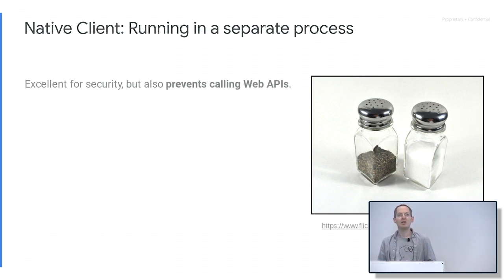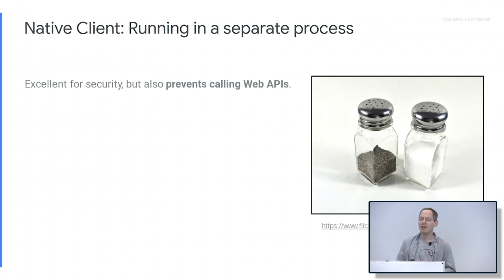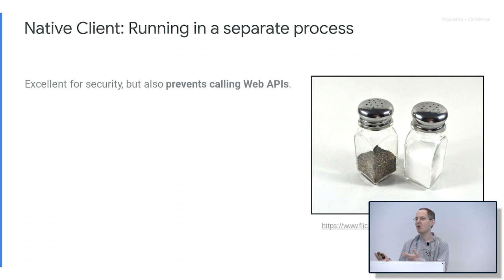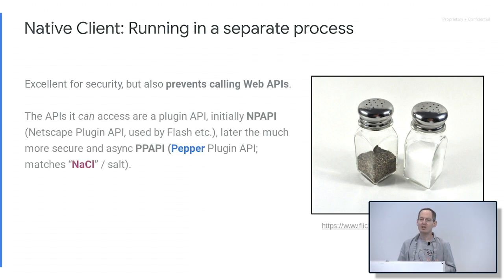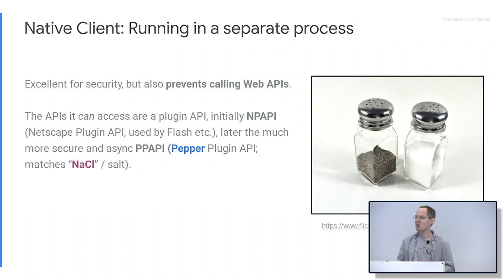Something worth spending time on is the fact that NaCl ran in a separate process. As already mentioned, this is great for security. But it had a large impact on what happened with the technology because it prevented calling web APIs — you're in a separate process than JavaScript and the DOM, so you can't just call the normal things that JavaScript would. What you can call is a plugin API. This was initially the NPAPI, the Netscape Plugin API used by Flash and Java back in the day. Later a new plugin API was made — Pepper, the PPAPI.